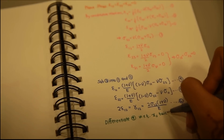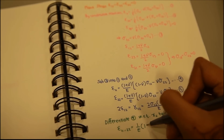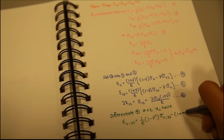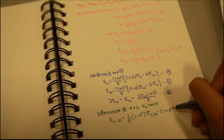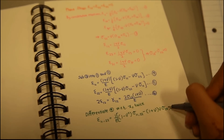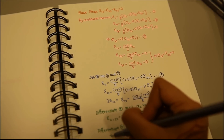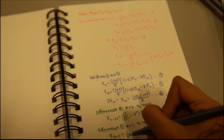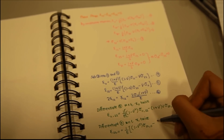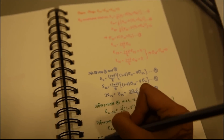We partially differentiate equation 4 (epsilon 1,1) with respect to x2 twice, giving epsilon 1,1,22 equals (1/E)(1 minus mu²)(sigma 1,1,22) minus (1 plus mu)(mu)(sigma 2,2,22). Then we partially differentiate equation 5 (epsilon 2,2) with respect to x1 twice, giving epsilon 2,2,11 equals (1/E)(1 minus mu²)(sigma 2,2,11) minus (1 plus mu)(mu)(sigma 1,1,11).